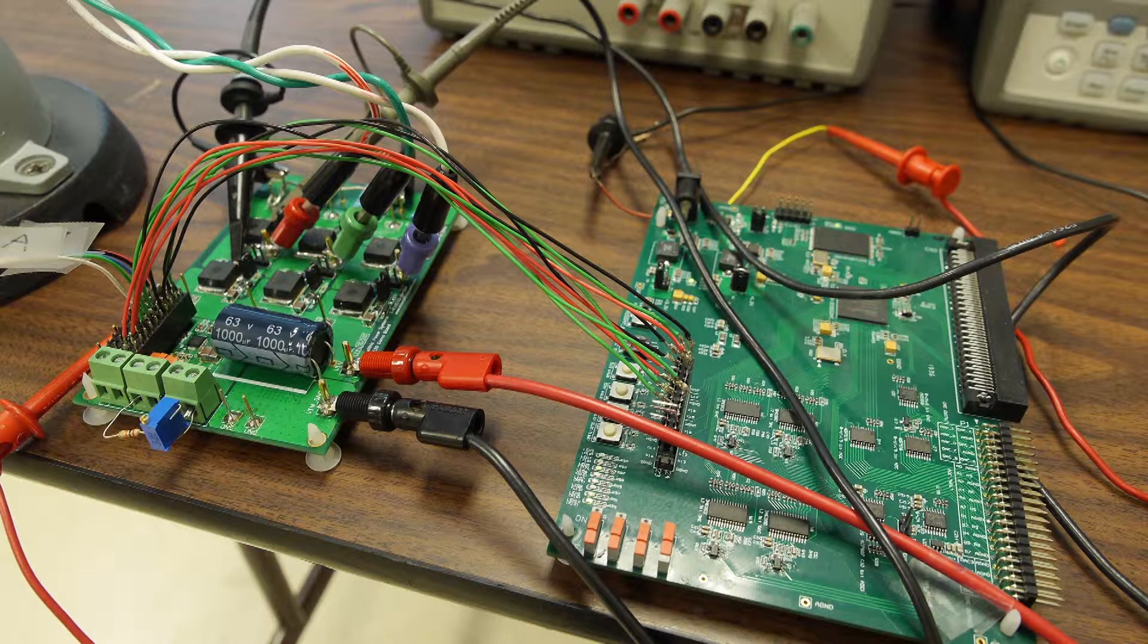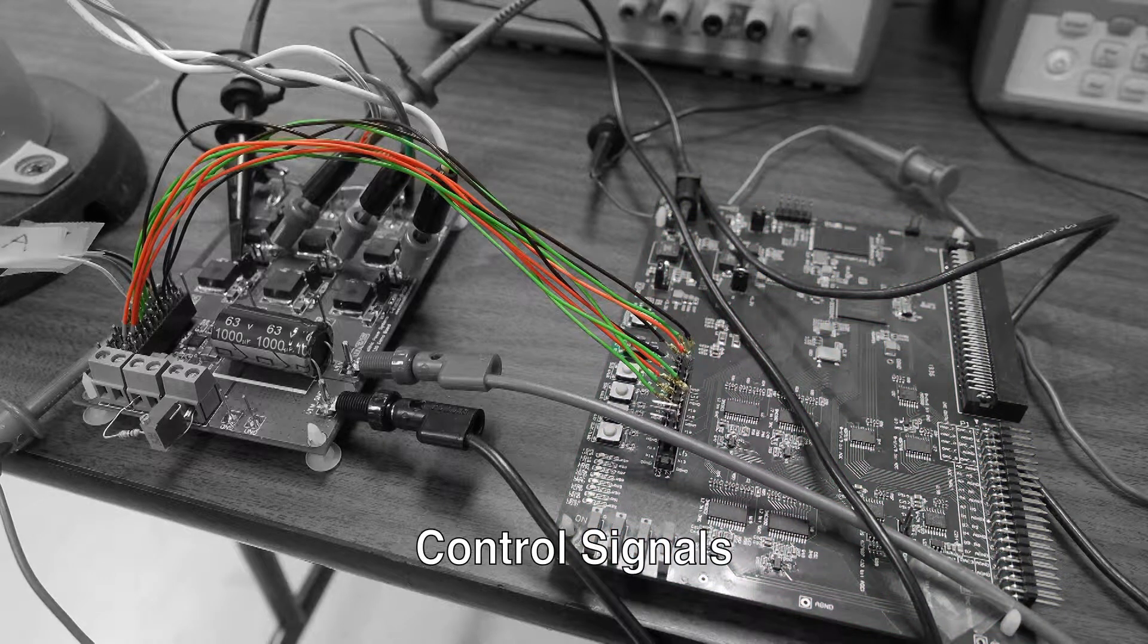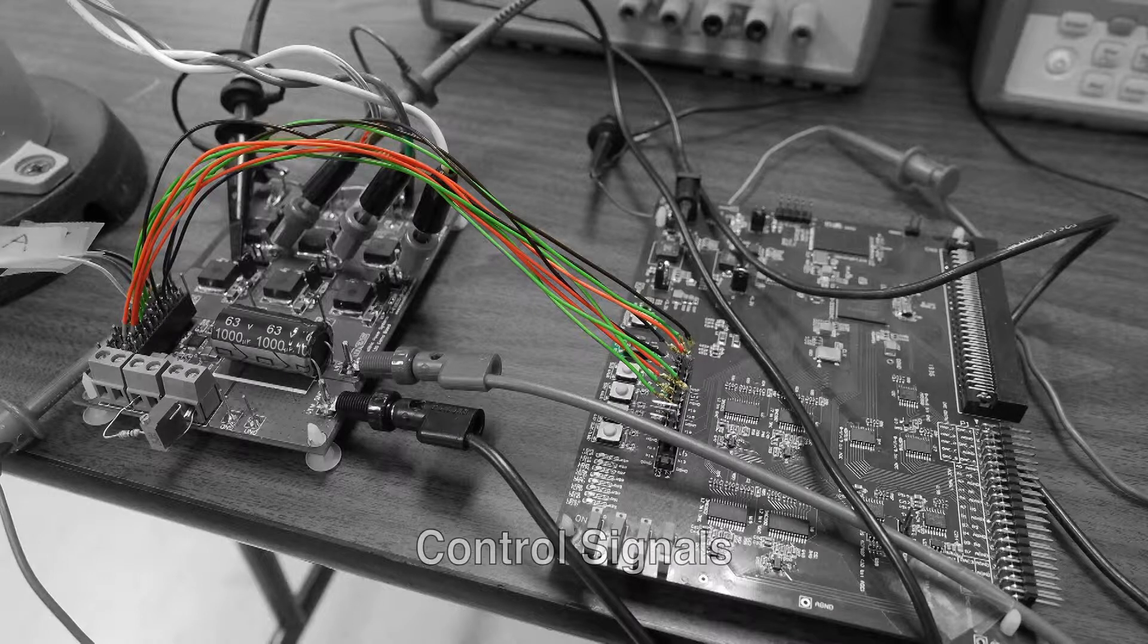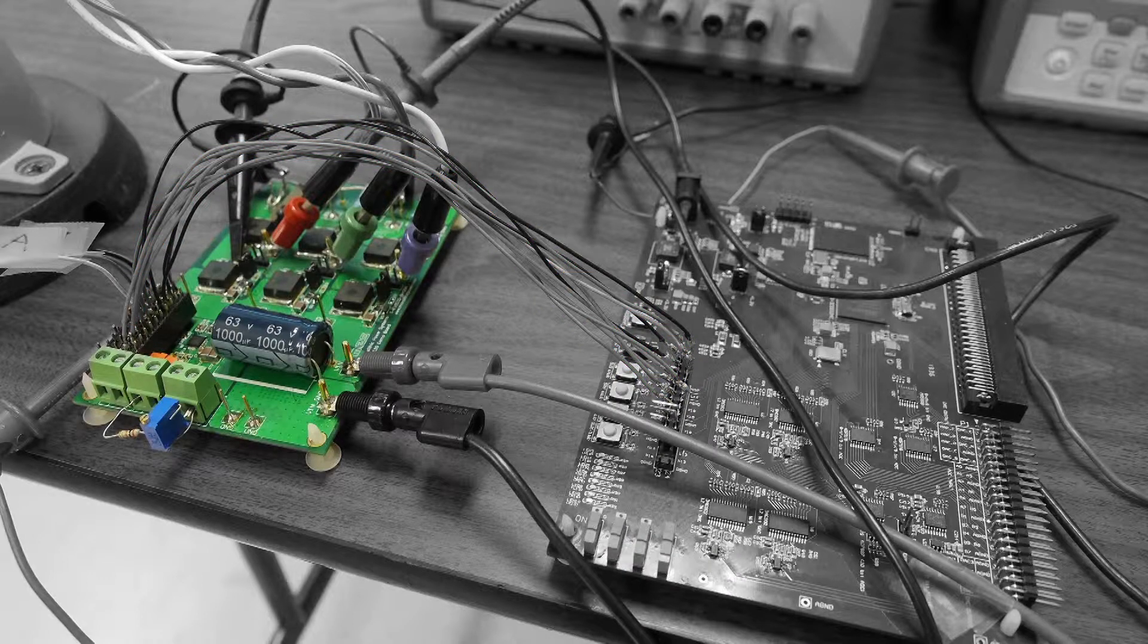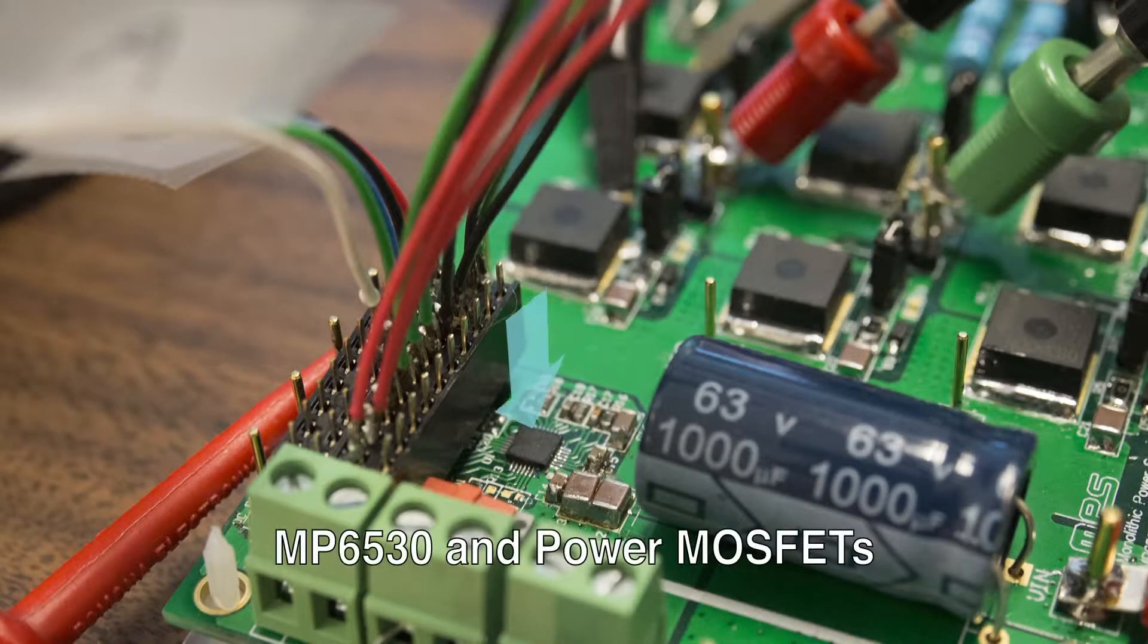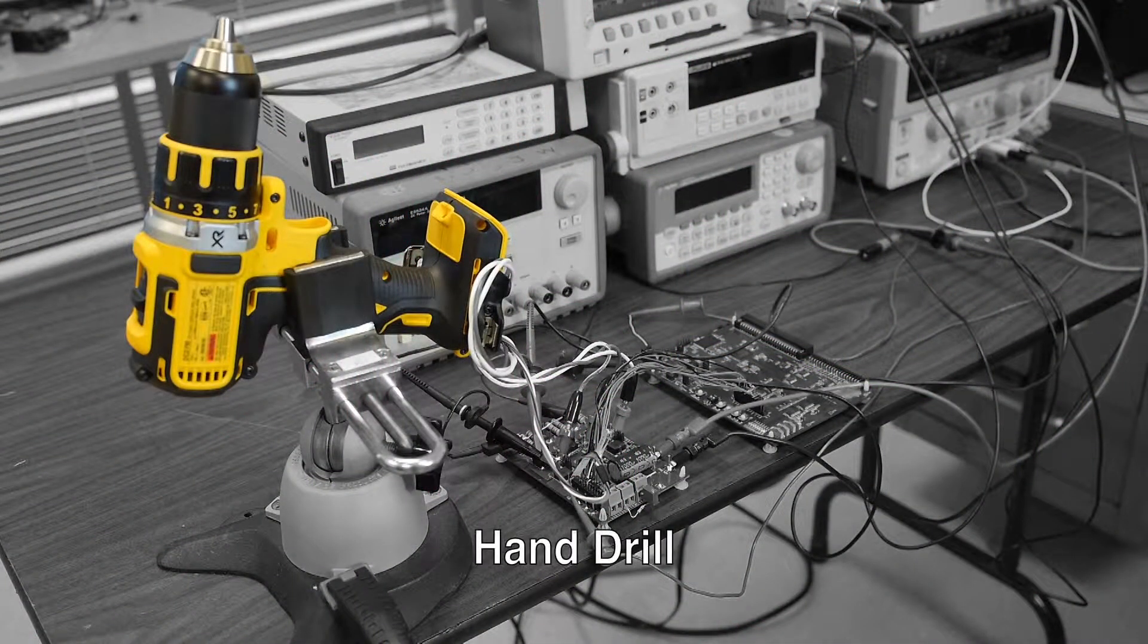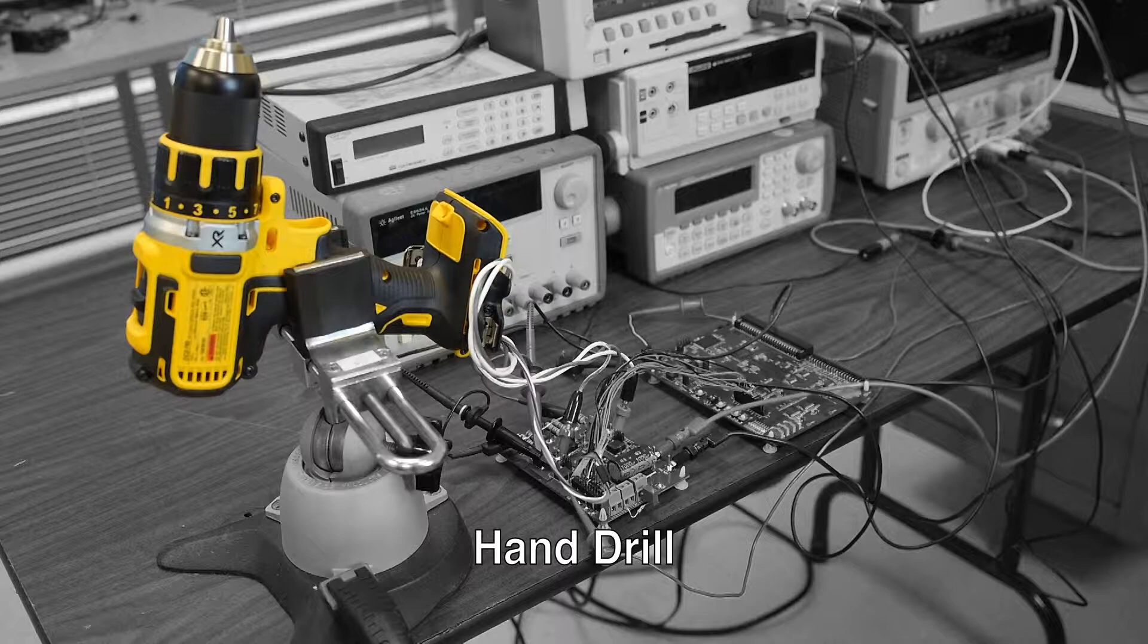This demonstration setup uses an FPGA to generate the control signals and commutation to drive a brushless DC motor. The signals from the FPGA go to an MP6530 evaluation board which has the MP6530 and also power MOSFETs contained on it. We have this connected to a brushless DC motor which is inside this power drill.